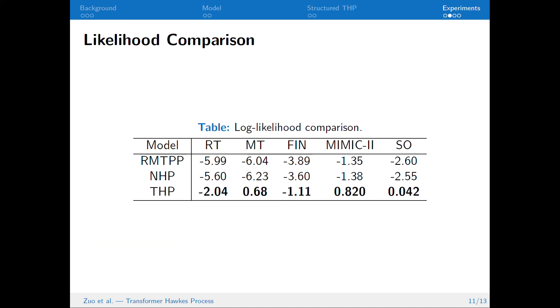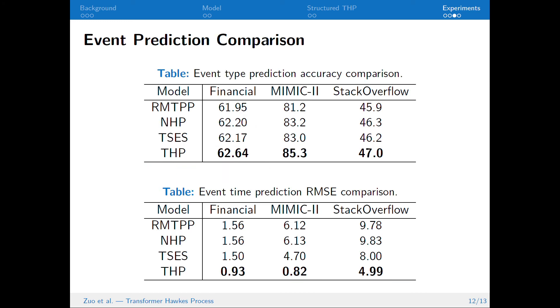Experimentally, we show that THP outperforms existing methods by large margins in the log-likelihood comparison task. Also, we show that THP achieves the best performance in both the event-type prediction task and the event-time prediction task.